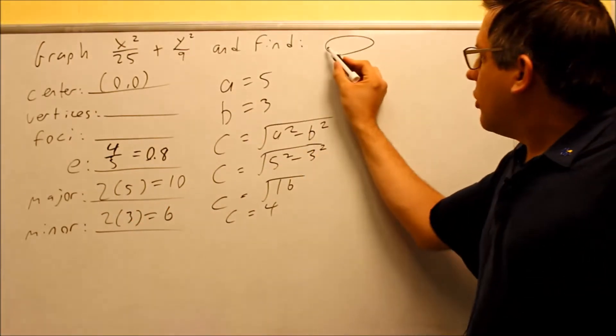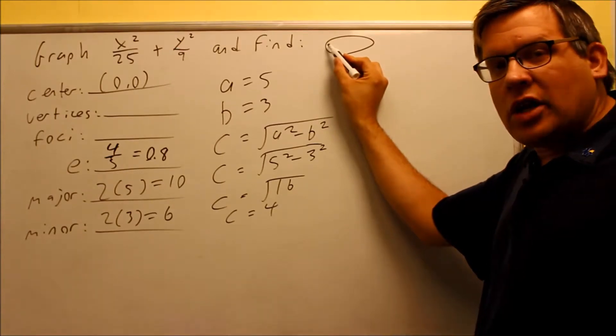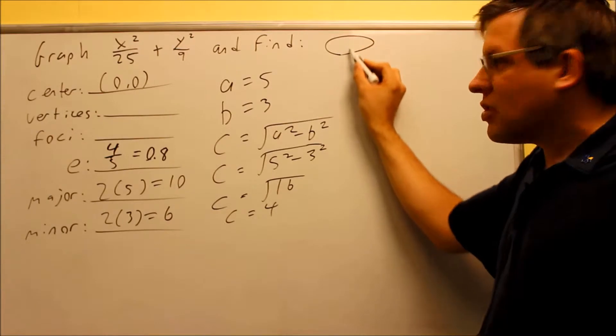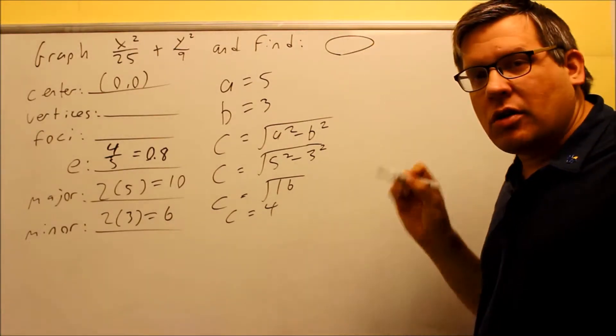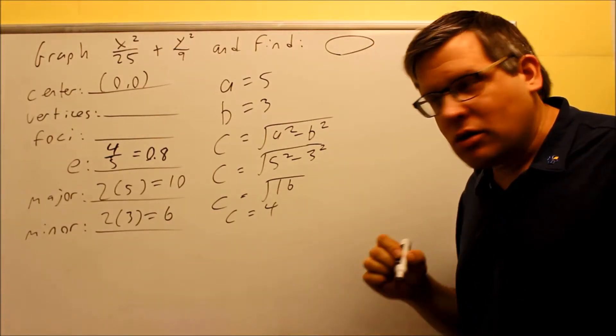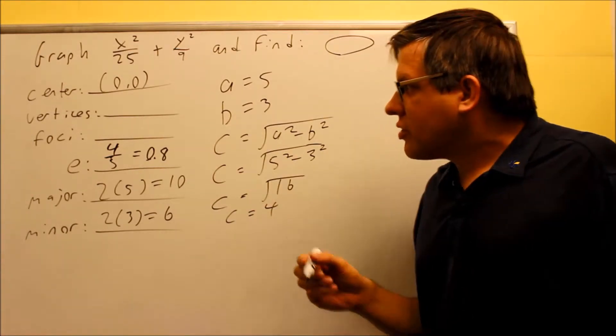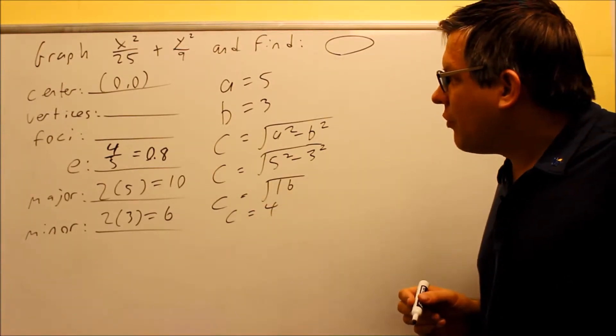And also, basically, the major axis is the length from one end, from one vertex all the way to the other vertex, and then the minor axis is going to be this width right here. So you could get those off the graph also, if you didn't remember the two formulas. Now that we're done with this, let's go ahead now and complete the graph for this one.